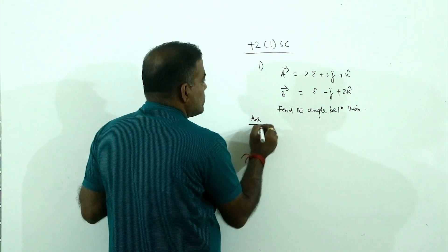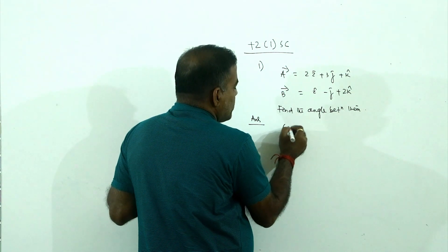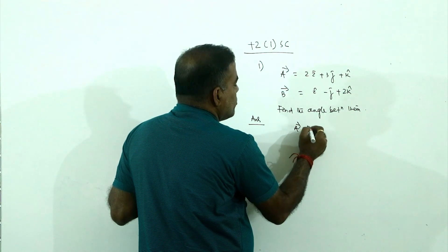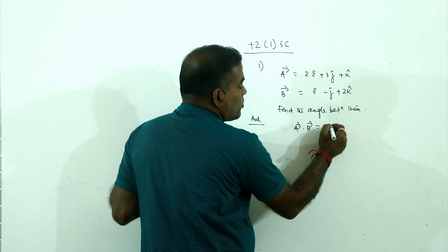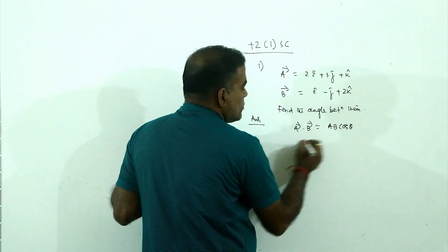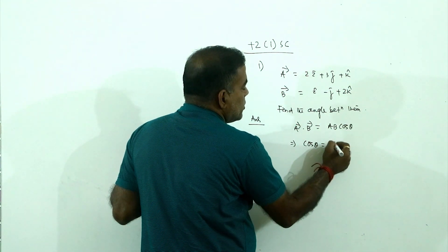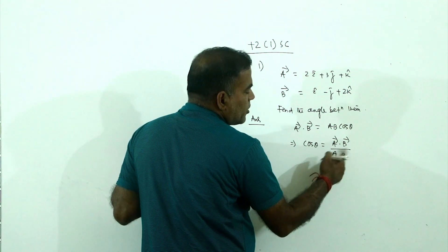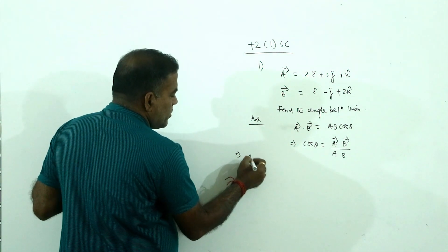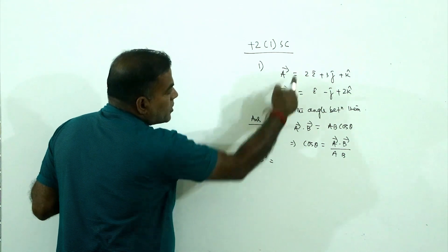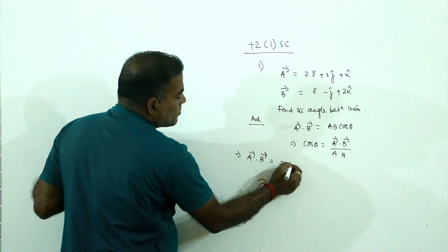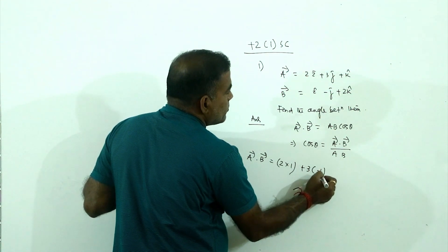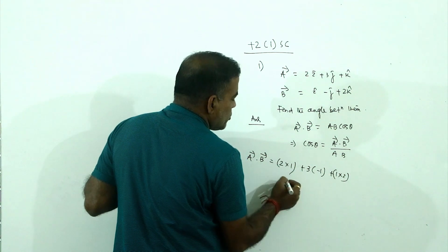Answer. The angle between them uses the dot product formula. cos(θ) equals a vector dot b vector divided by the magnitude of a times the magnitude of b. So a·b equals 2×1 plus 3×(−1) plus 1×2, which gives 1.